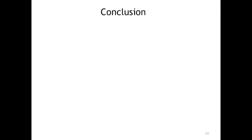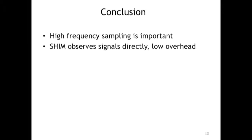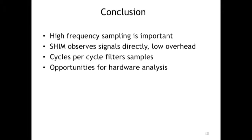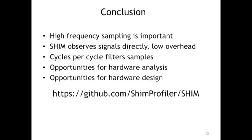Conclusion: we think high-frequency sampling is important. Shim tries to observe signals — not use interrupts — just observe anything it can. We use CPC to filter samples. We see opportunities for hardware design to bring cost overhead very low. The code is on GitHub, though as a PhD project it's a fast prototype. I'm also working with Andy Killian from Intel perf support to figure out how to provide the tool together.